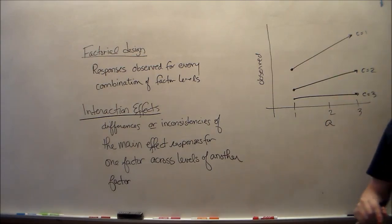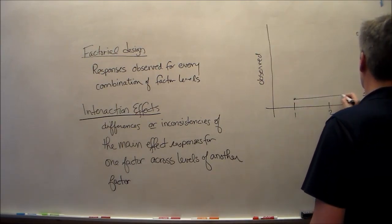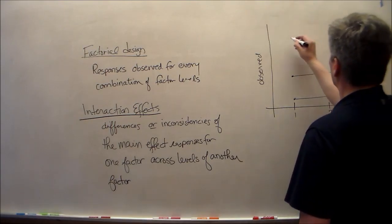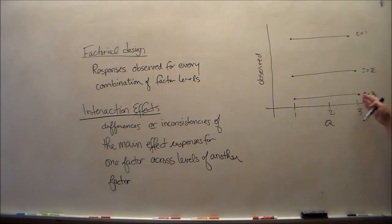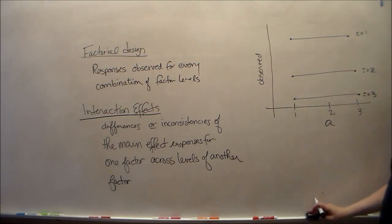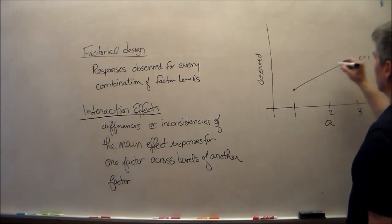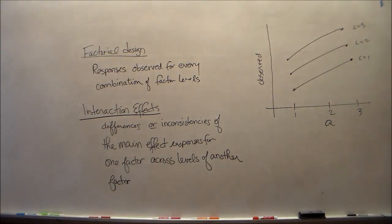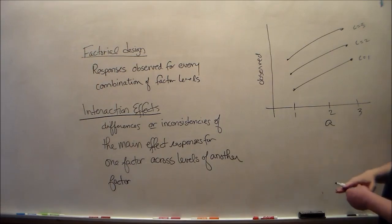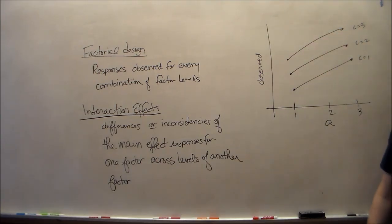Here's the effect of A as A goes from 1 to 2 to 3. Notice that the effect of A when C equals 1 is much greater than when C equals 3. There is an interaction between these two factors. If these line segments were parallel, the effect of A — essentially the slope — doesn't change with C, meaning there's no interaction. These are called profile plots.